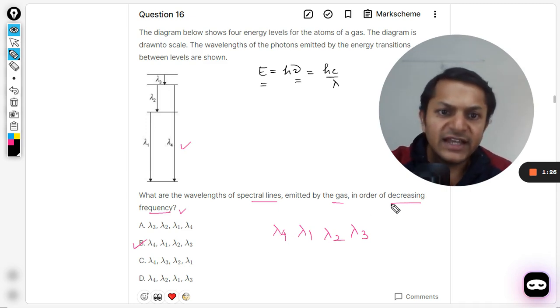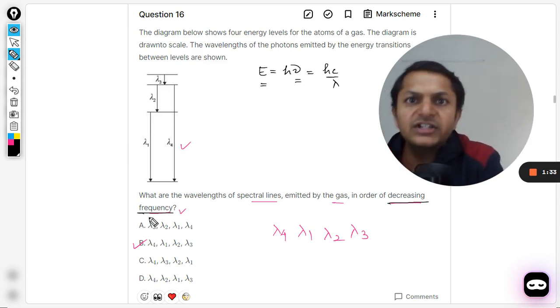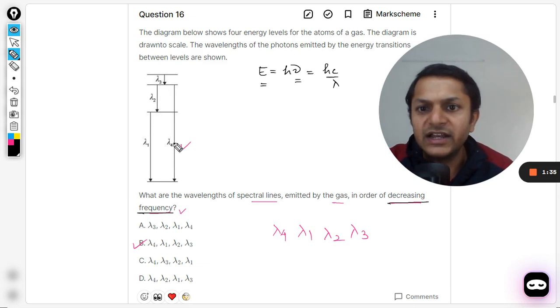So the more is the frequency, more is the energy. It says that we want to have decreasing order of frequency. So more frequency to lesser frequency means more energy to lesser energy. More energy is clearly available here because it's talking about lambda 4 - the gap.